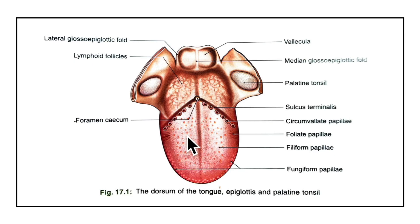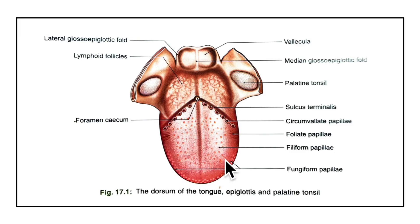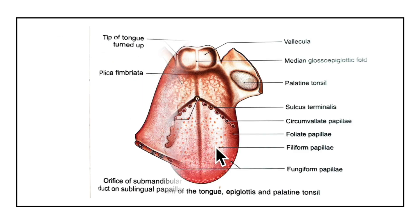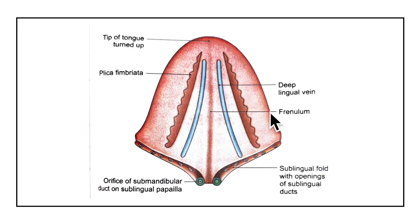The oral part or papillary part of the tongue is placed on the floor of the mouth. Its margins are free and in contact with the gums and teeth. The superior surface of the oral part shows a median furrow and is covered with papillae which make it rough. The inferior surface is covered with a smooth mucous membrane which shows a median fold called the frenulum linguae. On either side of the frenulum there is a prominence produced by the deep lingual veins.